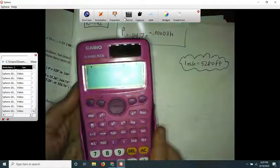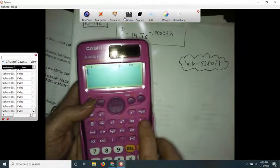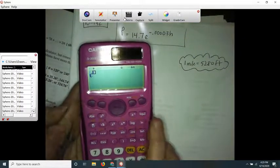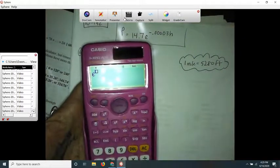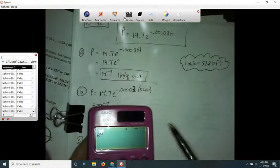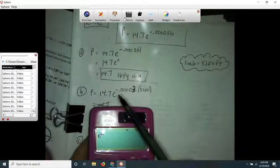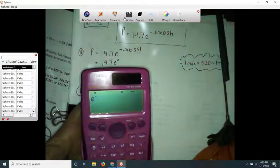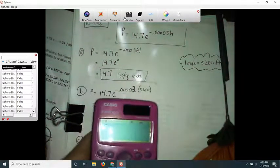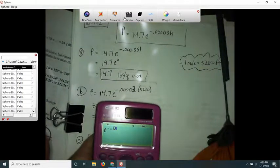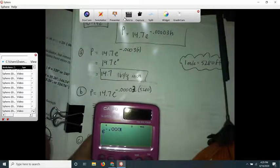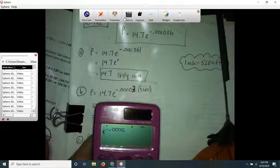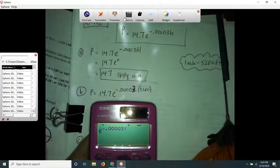So on my calculator I have a little LN key, and so if I push shift LN it'll let me raise e to whatever power I want to. And I want to raise e to the negative, just push the little negative sign, 0.00003.